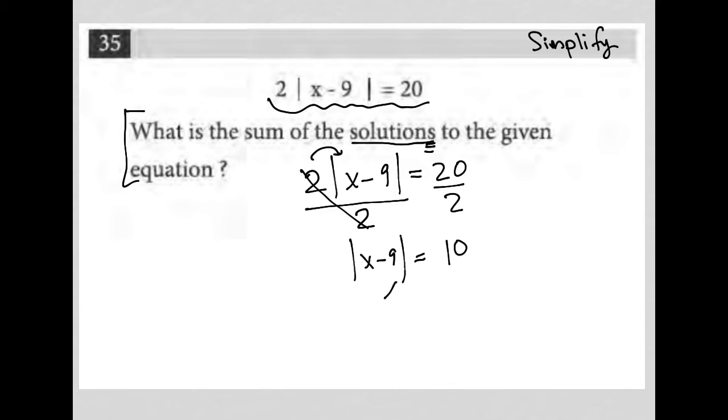The next step after isolation is to rewrite the equation in two ways. The first way is as it already looks, just without the absolute value symbol. And the second is, again, close to how it looks, except you change the sign of the answer.